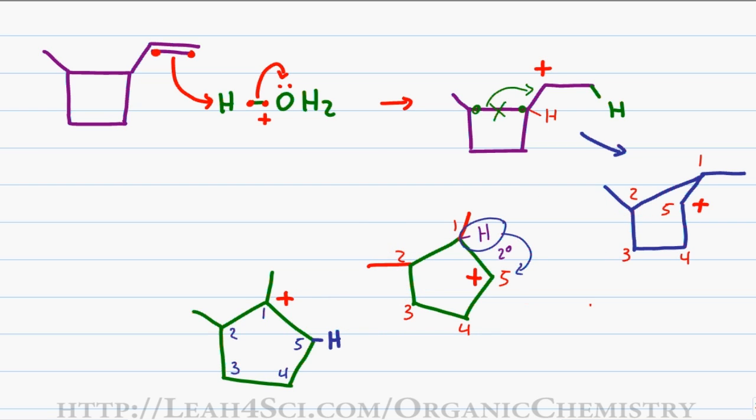Now that I have a carbocation in a tertiary position, the rest of the reaction can take place. And this will be the attack of the carbocation by a water molecule followed by the removal of an extra hydrogen which I will not show here to give me a final product of a cyclopentane with one methyl group and then an alcohol on the same carbon as a second methyl group.